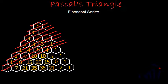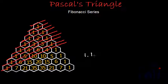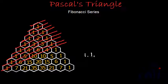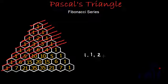But what is the Fibonacci series? Let's first note down the Fibonacci series. In the Fibonacci series, the first term is 1, the second term is also 1, and from the third term onwards, every term is the sum of its previous two terms. So if I want to find the third term, it will be the sum of the first and second terms — that is, 1 plus 1 equals 2.